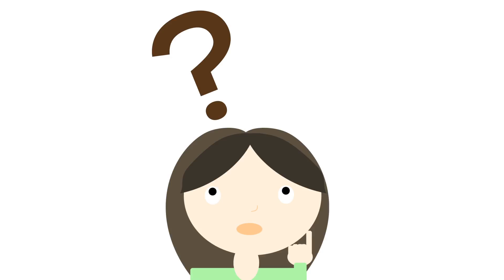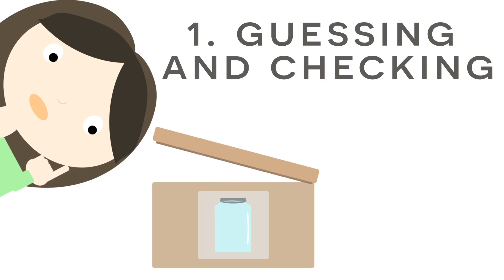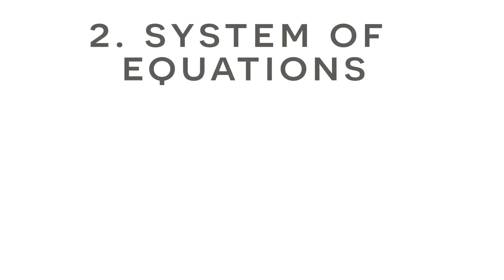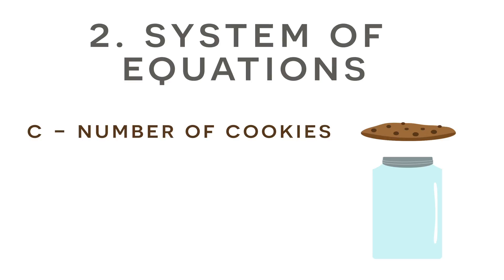So exactly how many cookies and jars do we have? Well, there's two ways to solve this problem. One way is just by guessing and checking, which I feel like anyone can do. So I want to show you how to solve this using a system of equations. Let's create a system of equations using the information that was given to us at the beginning of this video.